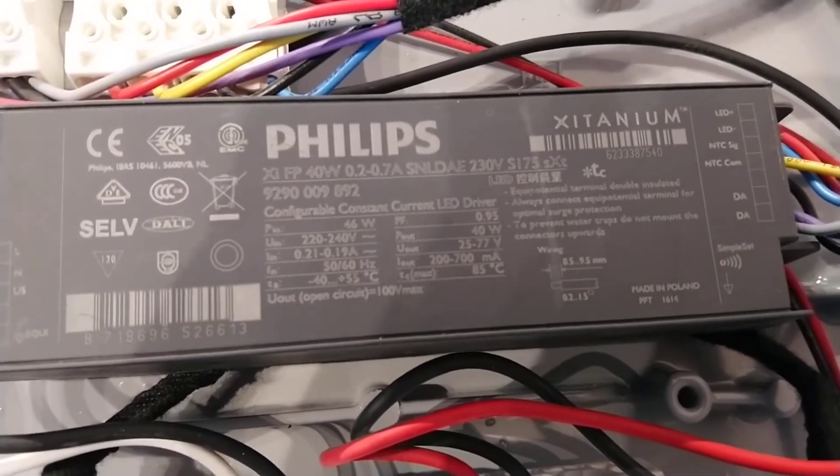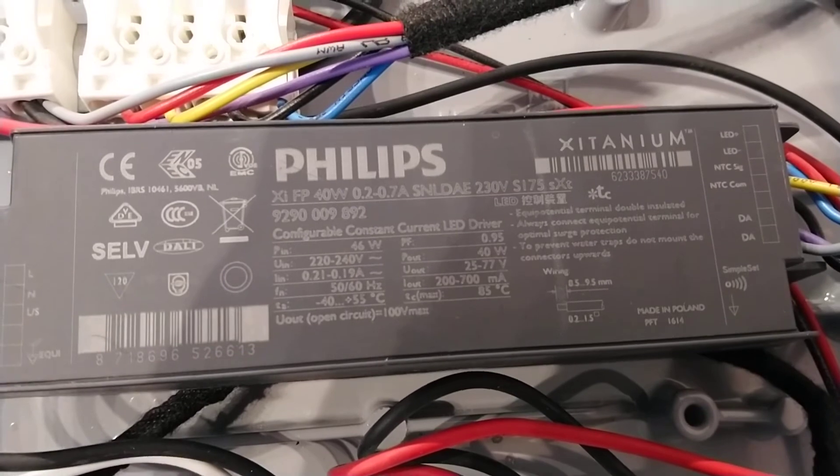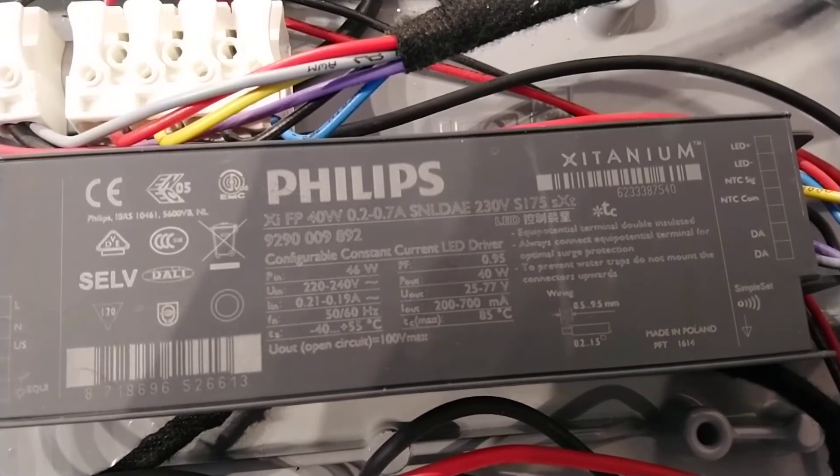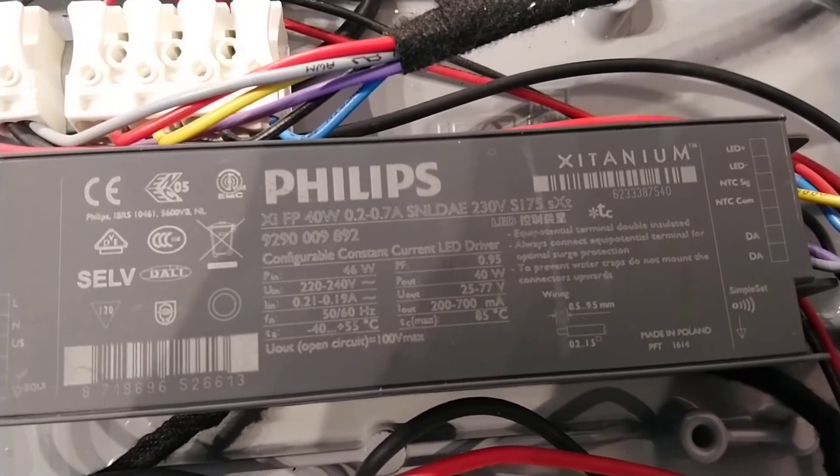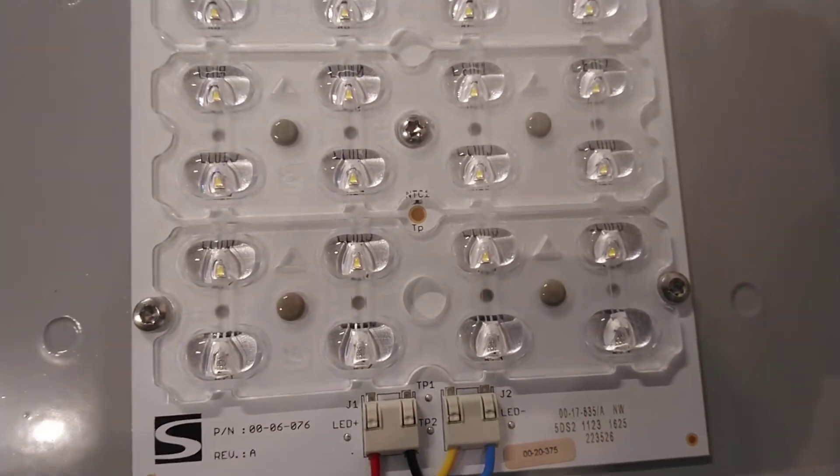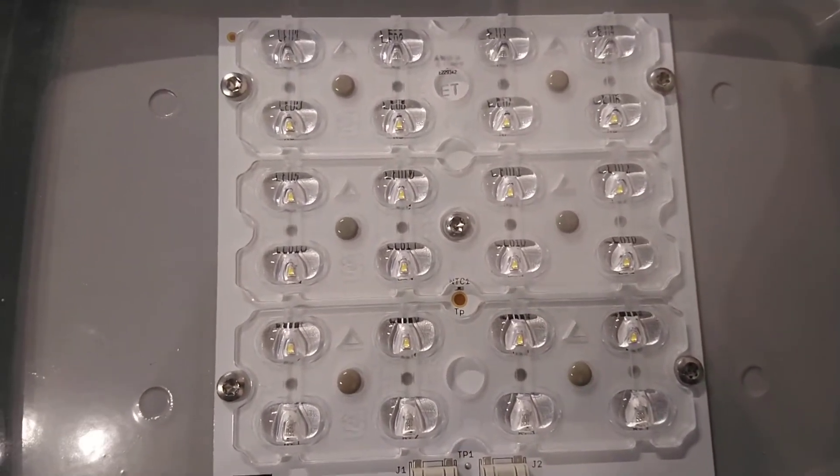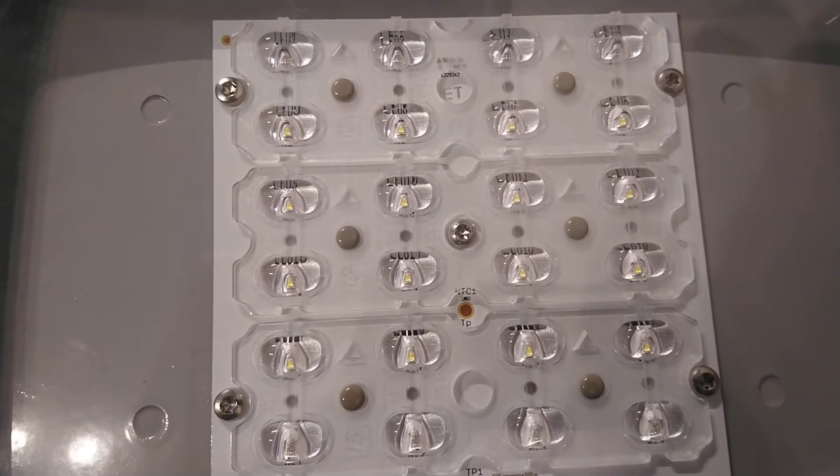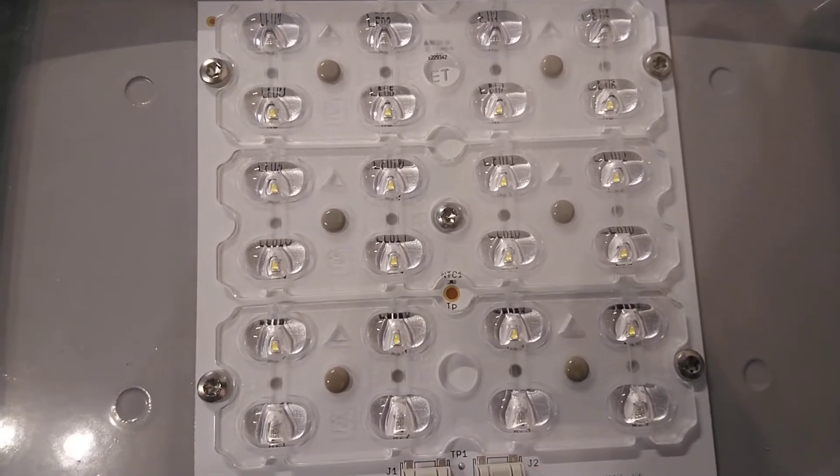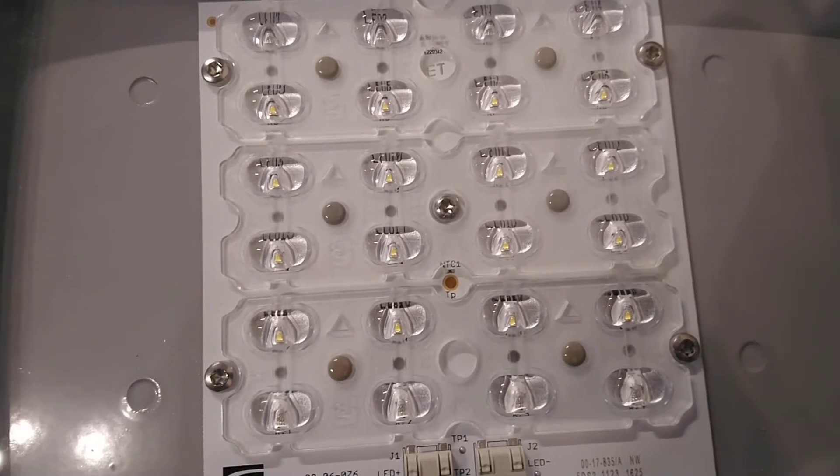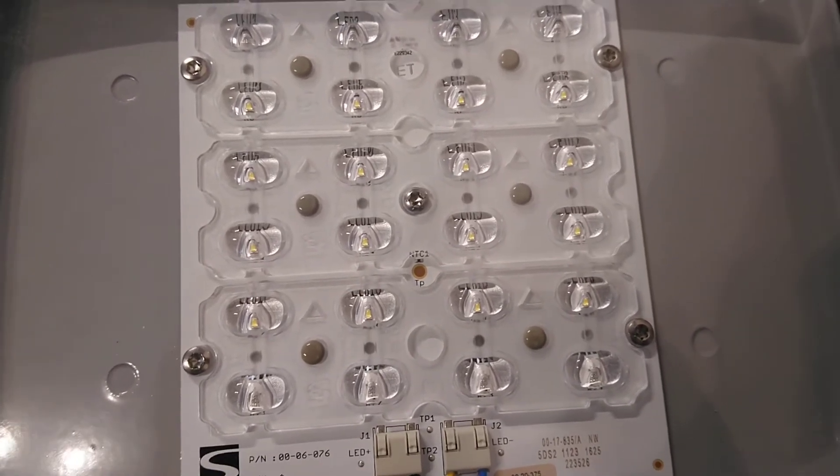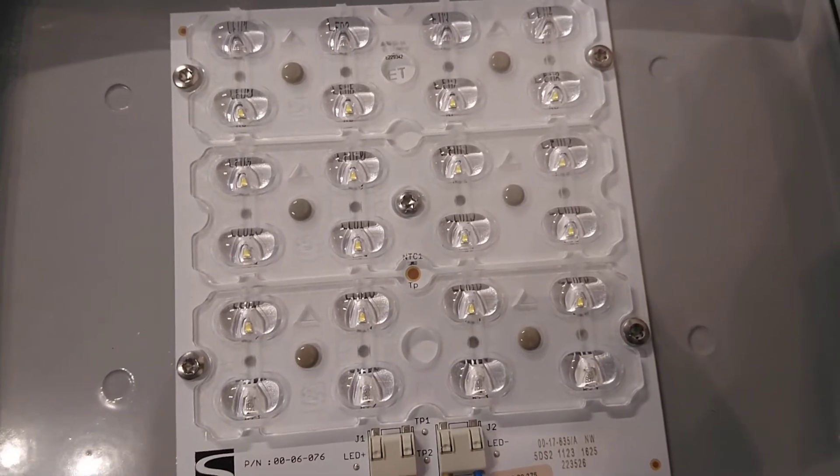This is the driver. Hopefully you can read that information - I'll hold it there so you can pause it for the model and everything. It says 40 watt on the driver, but I know that this light is actually 36 watts. You do lose a little bit in the drivers. These are the LEDs. As you can tell, I'll show you a bit closer in a minute - the actual bottom row and the top row have no LEDs. There's only 16 LEDs in this light, so I gather it's two watts per LED which makes the 32.